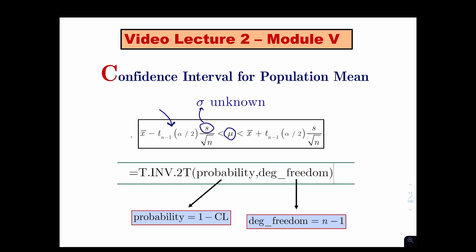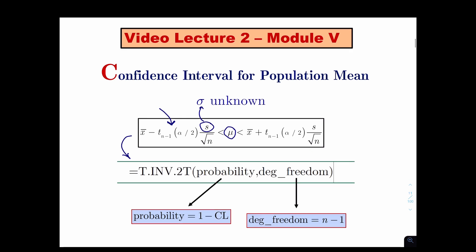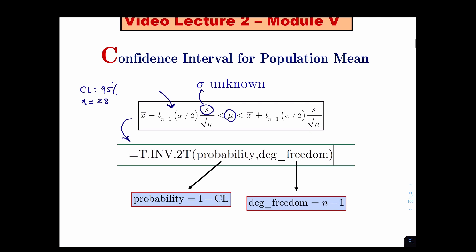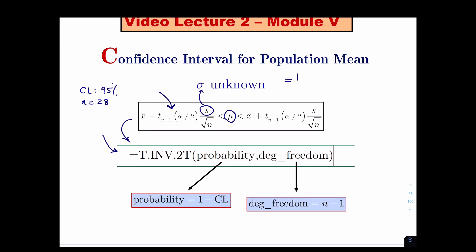We'll just teach you how to figure out what the T value is when it's given to you. Every time I give you a confidence level in any given exercise — let's say the confidence level is 95% and the sample size is 28 — you would find the T value by typing: equals T dot inverse dot two T.